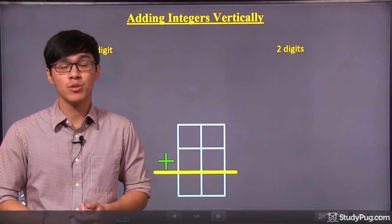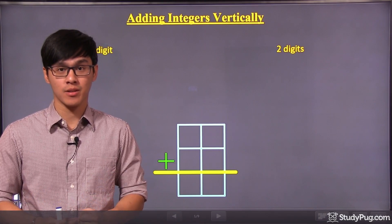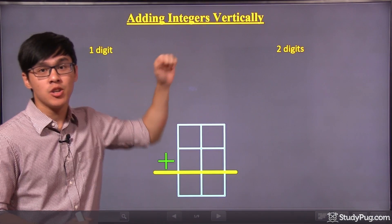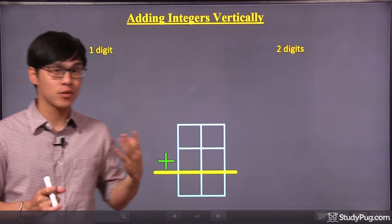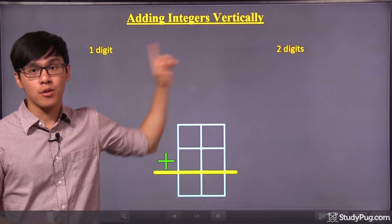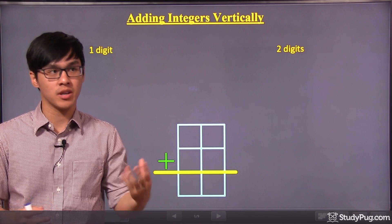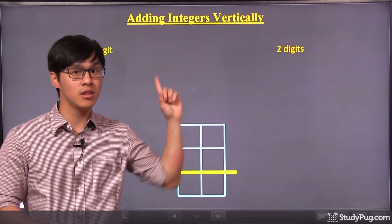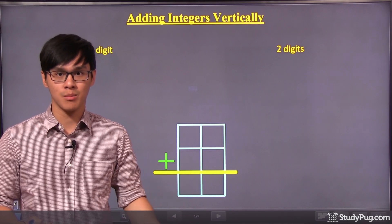In part two of this section, I would like to introduce you to a very useful technique for adding integers together. This technique is called adding integers vertically. For integers, you can have as many digits as you want. However, for this section, we're just going to be sticking with one-digit and two-digit numbers. When you're adding one-digit numbers, you won't see that it will be so much faster because one-digit numbers are just so easy. However, for two digits or more, using this technique you will be able to tell that it's so much faster and easier instead of using a number line.